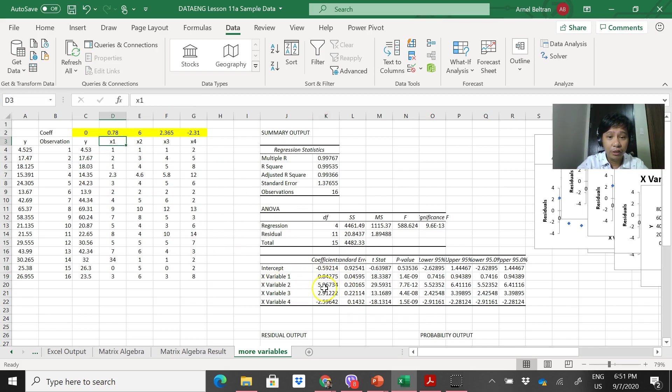5.96, so that's 6. 2.9, so that's 2. The effect on x3 is a bit bigger, and this one is negative 2.56, negative 2.31.